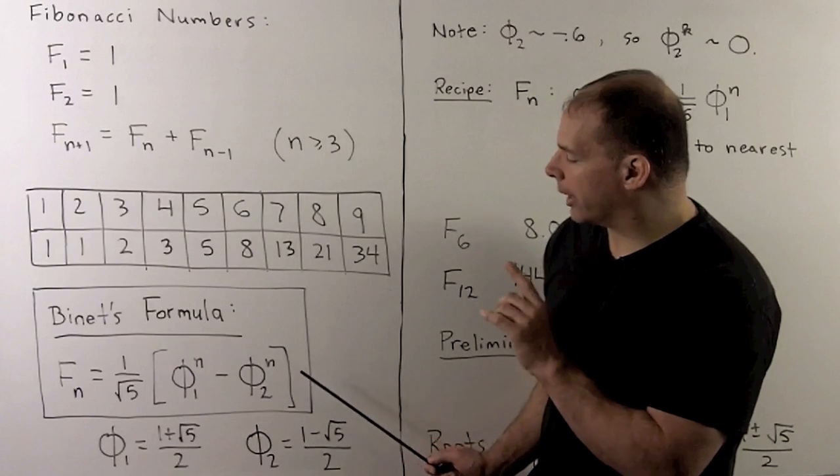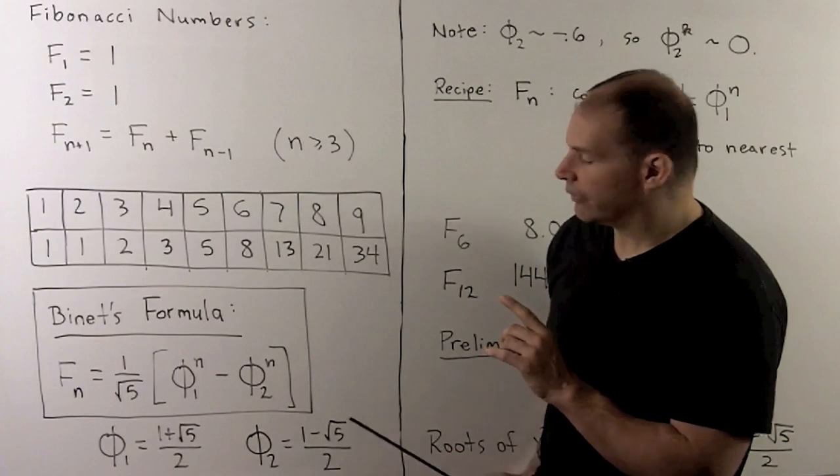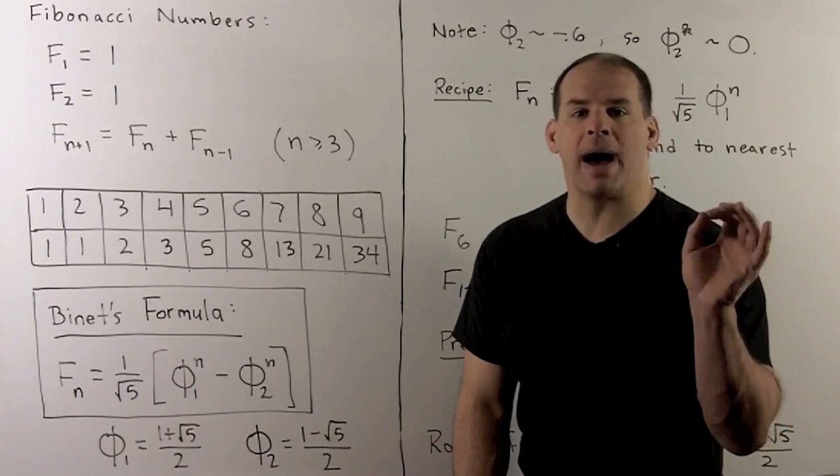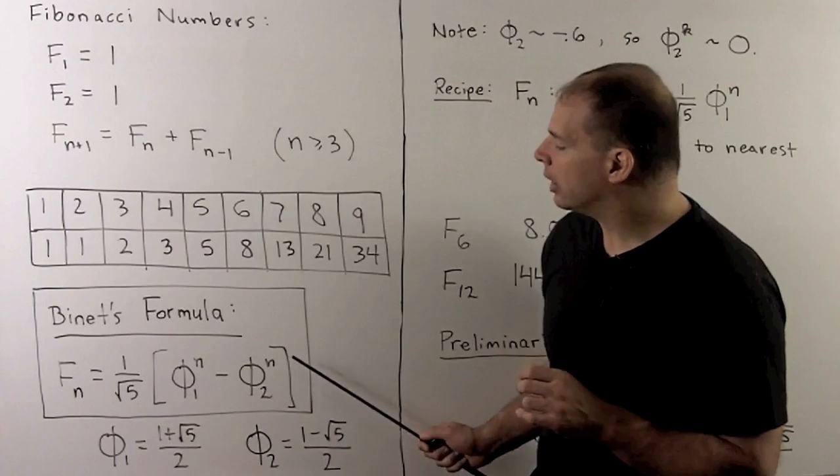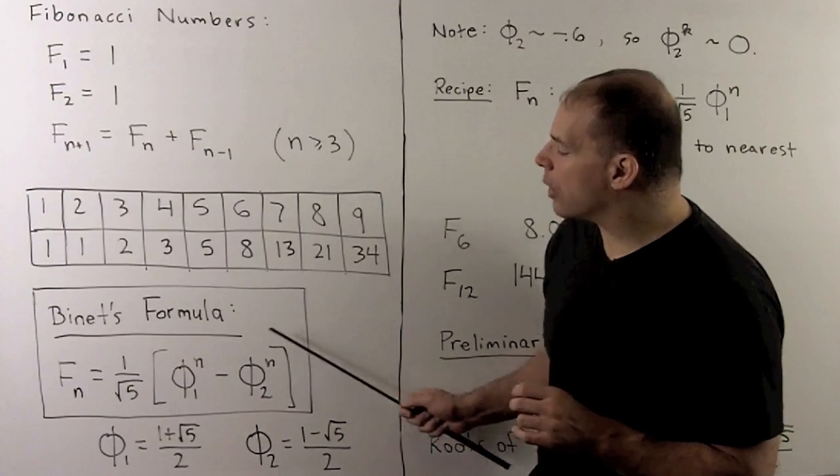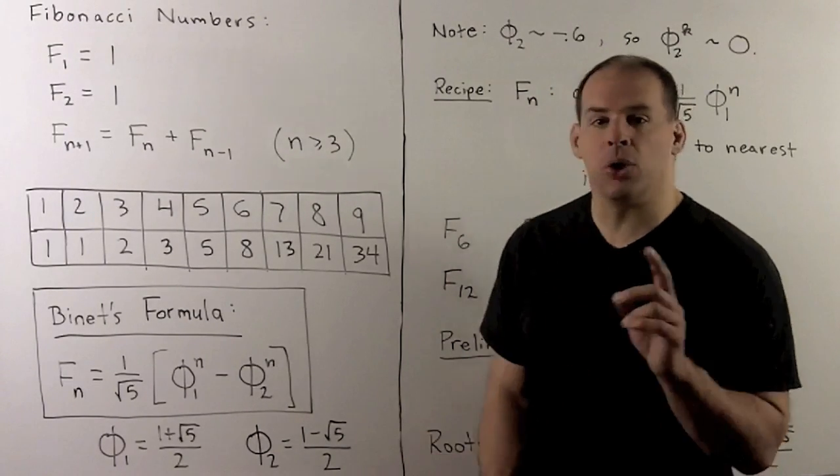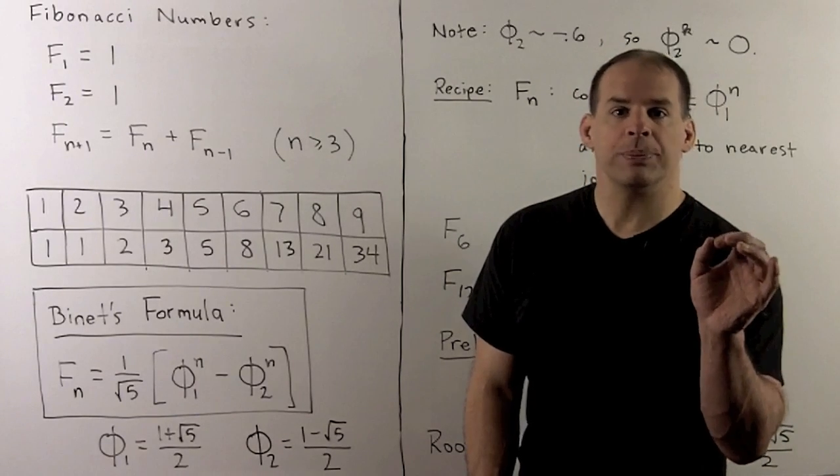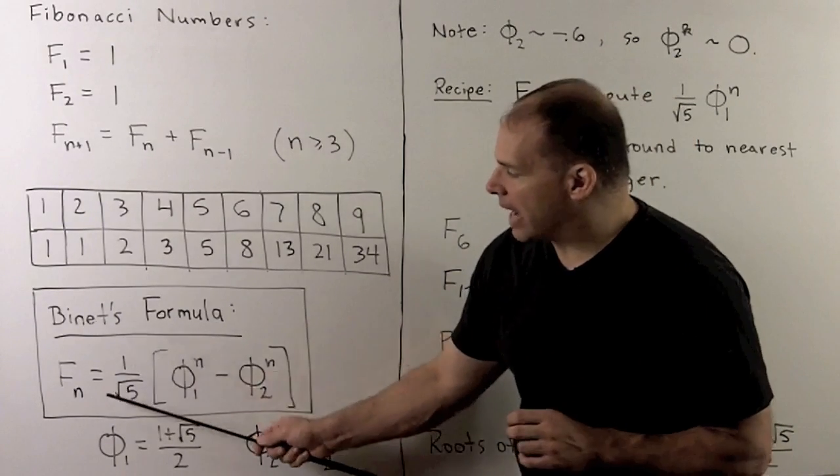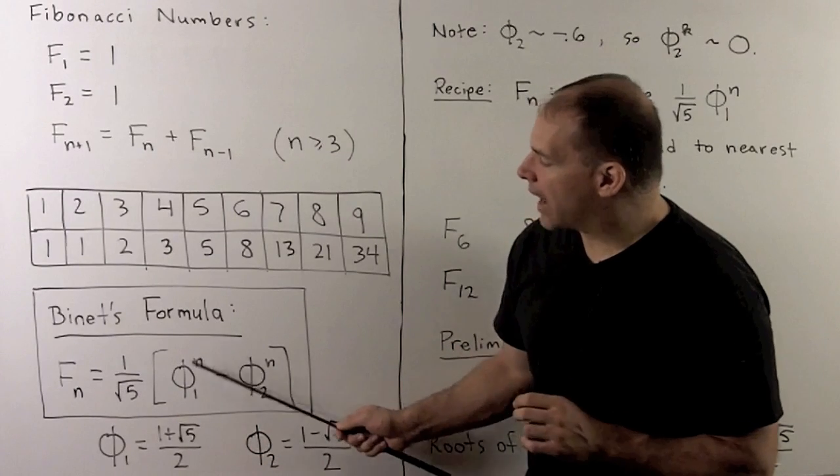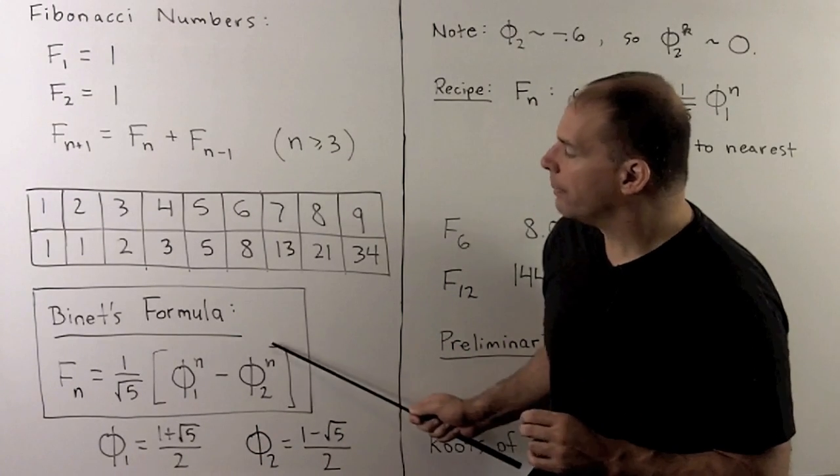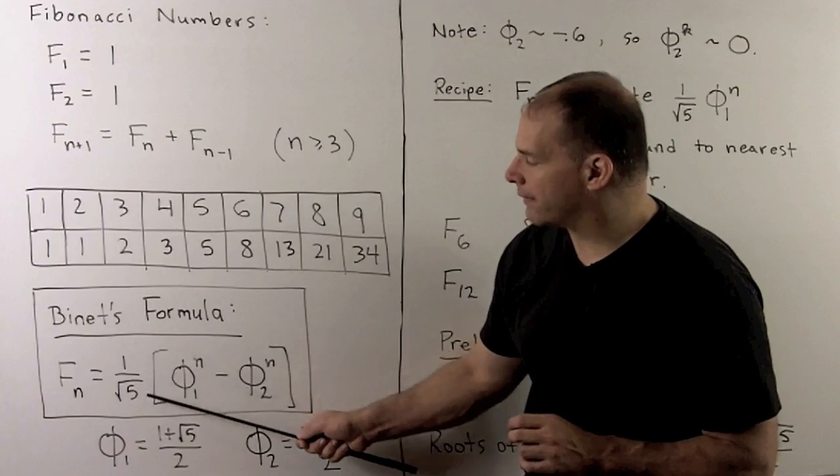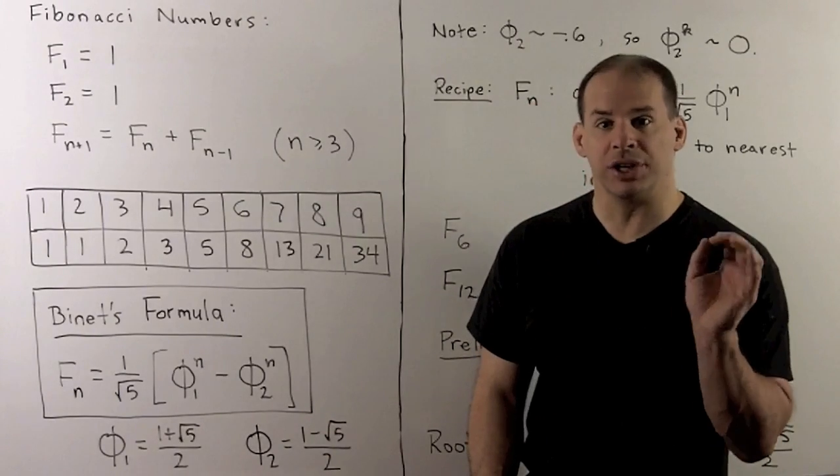Now, one consequence of the formula, phi 2, if you put that in a calculator, it's roughly minus 0.6. So, when we start taking powers of this, this thing's going to get closer and closer to 0. So, the rule that we can use, if I want the nth Fibonacci number, I want to take phi 1 to the nth power, we could treat this as 0. I'm just going to divide by square root of 5, and then round to the nearest integer.